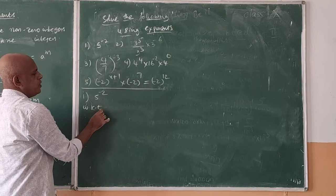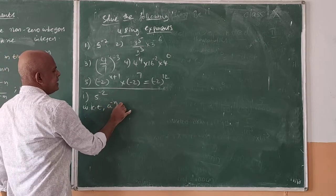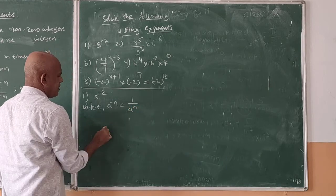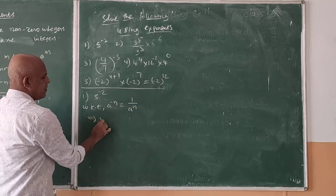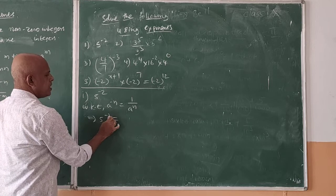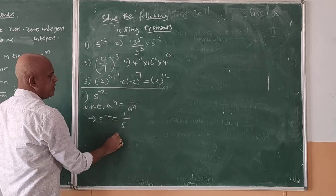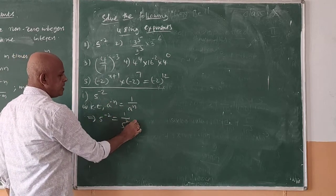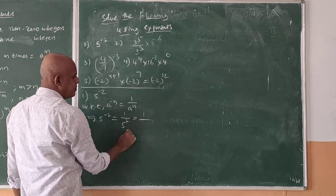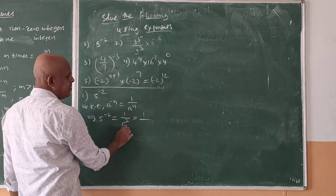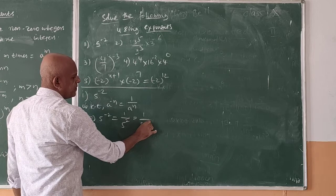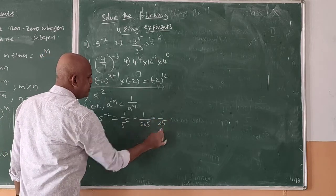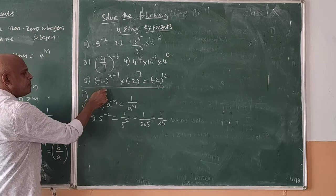We know that a to the power of minus n is equal to 1 by a to the power of n. So 5 to the power of minus 2 can be written as 1 by 5 to the power of 2 — minus 2 becomes plus 2. That is equal to 1 by 5 squared, which means 5 into 5, that is equal to 1 by 25. This is the value of 5 to the power of minus 2.